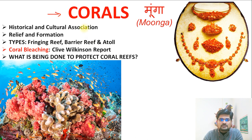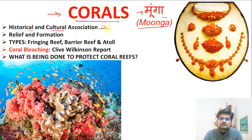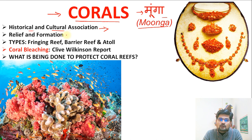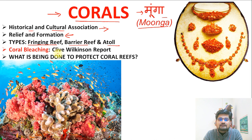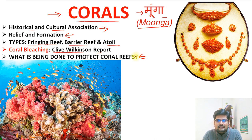Corals are also known as 'moonga' in Hindi, and historical and cultural associations are important aspects we'll cover. We are going to talk about relief and formation, various types like fringing reef, barrier reef, and atoll, then coral bleaching — an important process — and the Clive Wilkinson report. At the end of this session we'll learn about what is being done to protect these coral reefs.